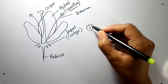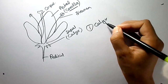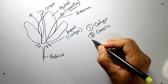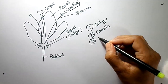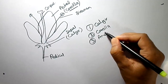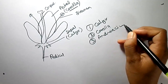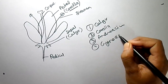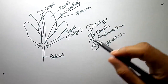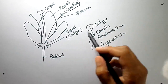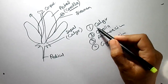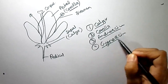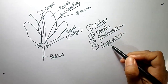The first one is Calyx. The second one is Corolla. The third one is Androsium. And the fourth one is Gynosium. So these are the basic four parts of a flower: Calyx, Corolla, Androsium, and Gynosium.